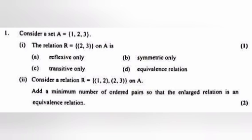Consider a set A equal to {1, 2, 3}. The relation R equal to {(2,3)} on A is: A) reflexive only, B) symmetric only, C) transitive only, D) equivalence relation. Answer: C, transitive only.